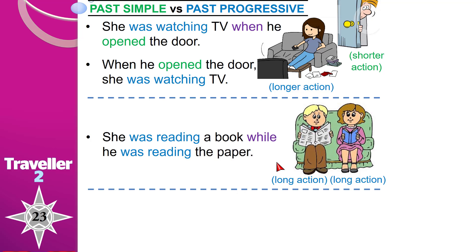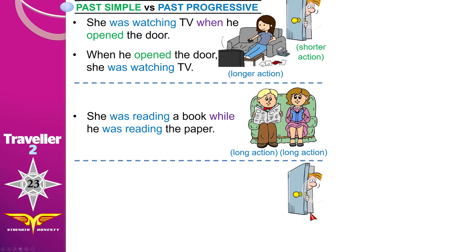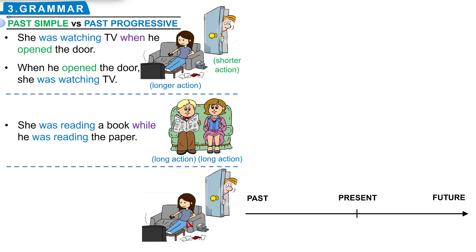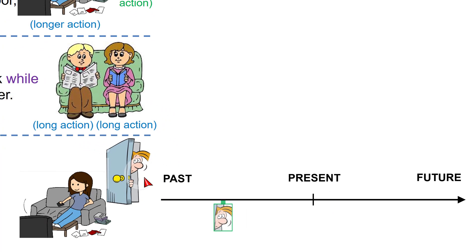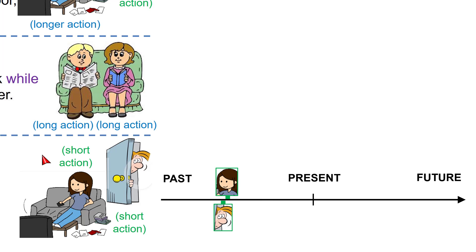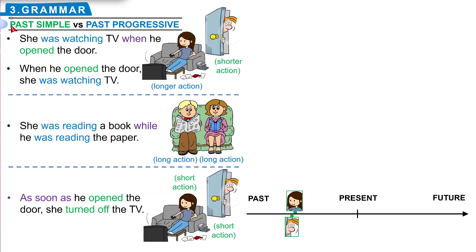The last example: he opened the door, she turned off the TV to spend time with her husband. Both happened in the past. Which one happened first? He opened the door first — short action — and then as soon as he opened the door, she turned off the TV. Short action and short action: we give them both past simple.